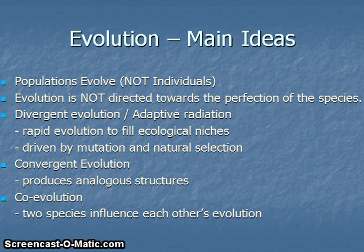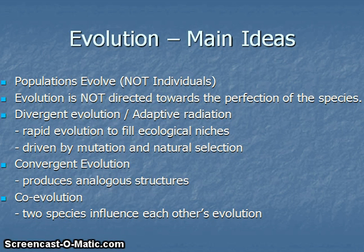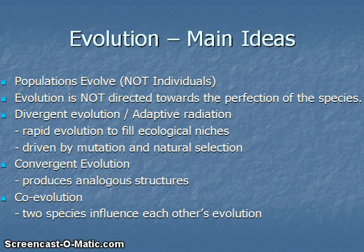Convergent evolution produces analogous structures. For example, if we look at the body structures of dolphins and sharks, we see many commonalities — yet the dolphin is a mammal and the shark is a fish. The reason they have such similar body plans is because they live in the same environment. The environment has shaped their evolution through natural selection, giving them similarly structured fins, flippers, and tails. But these structures evolved separately, so we're talking about convergent evolution.